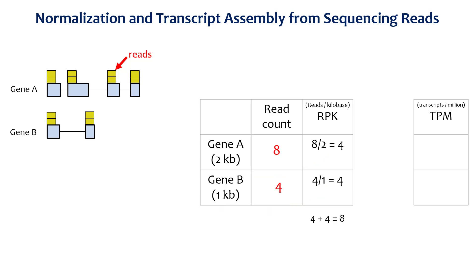Next, the RPK value for all the genes within a sample are summed and this value is divided by one million. This results in a scaling factor that when applied to the RPK values, normalizes for sequencing depth and gives transcripts per million, or TPM.